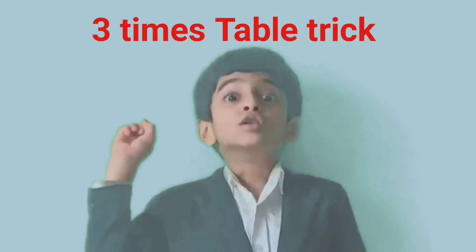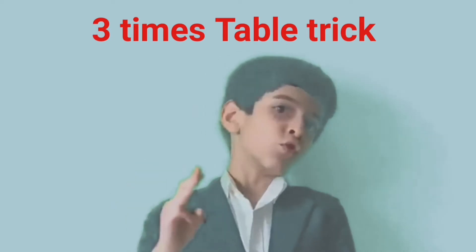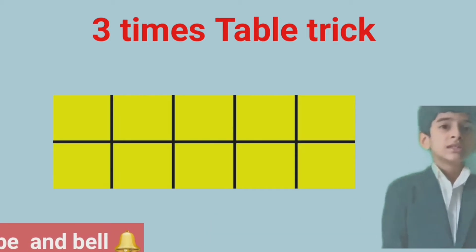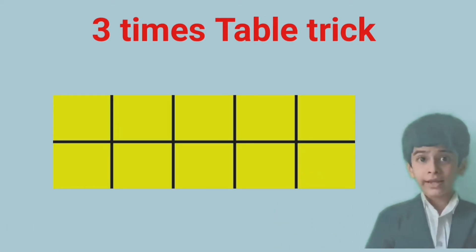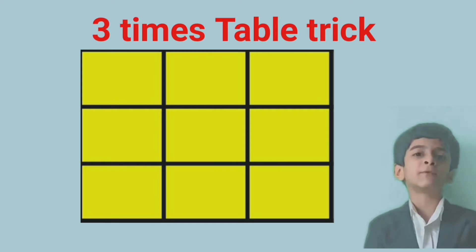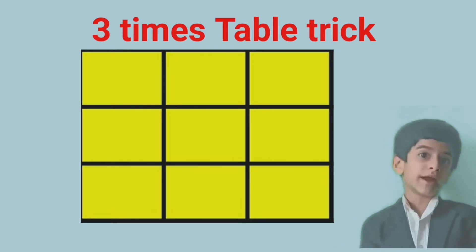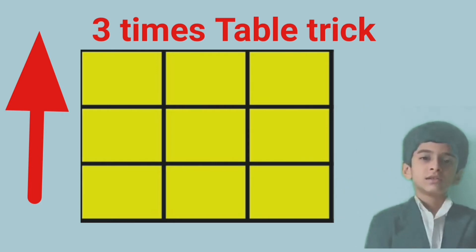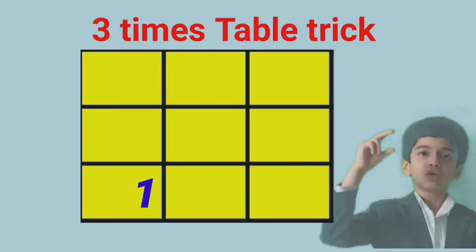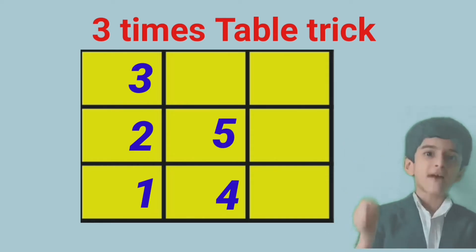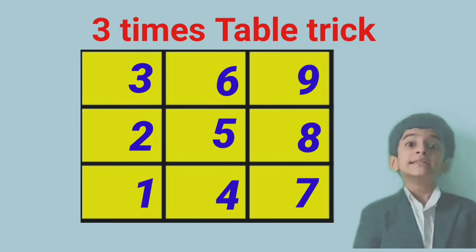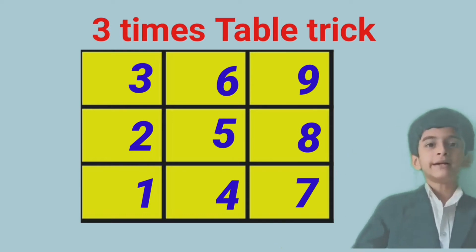Let's draw out a tic-tac-toe grid — three rows and three columns. In the previous video we wrote from the top row to the bottom row, but in this video I'm going to show you the three times table trick going from the bottom to the top row. So let's write one, two, three, four, five, six, seven, eight, nine. Then write in the bottom row, right side: zero.